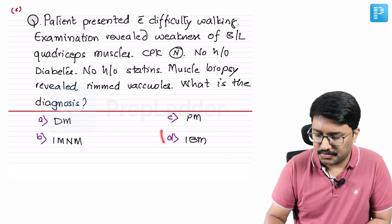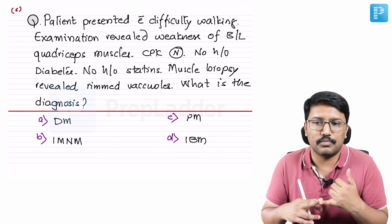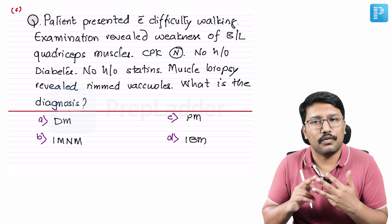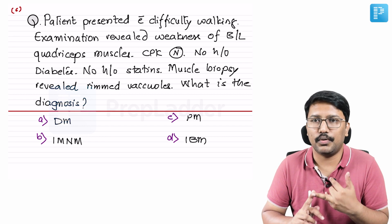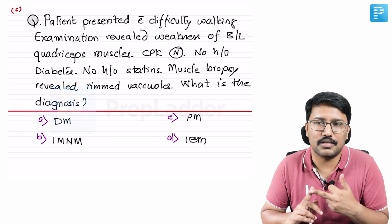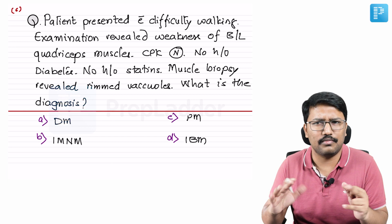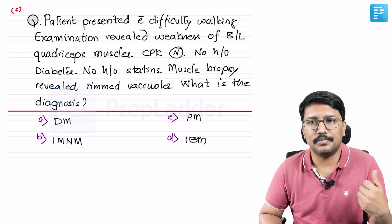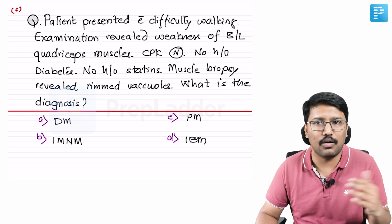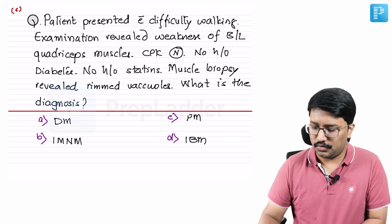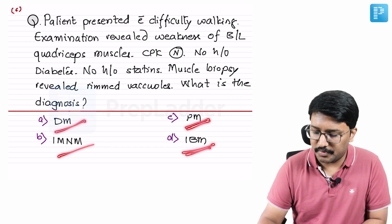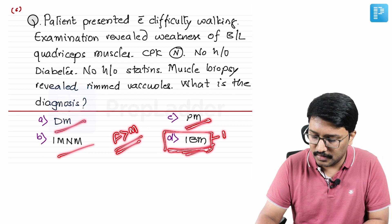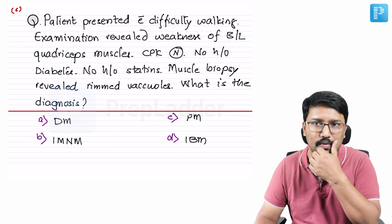Key points about inclusion body myositis: unlike dermatomyositis, polymyositis, or immune-mediated necrotizing myositis, there is no invasion of muscle fibers by inflammatory cells. Other idiopathic inflammatory myositis diseases typically affect people under 40-50 years old, but IBM presents in elderly populations. CPK levels are not grossly elevated in IBM, unlike other cases. Also, most idiopathic inflammatory myositis diseases affect females more than males — but IBM is an exception, with males more affected. IBM is a man of exceptions: age, gender, and behavior.